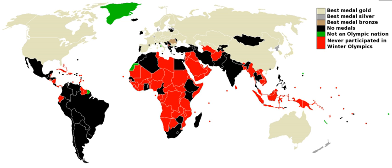Germany has competed under five different designations, including as two separate teams at several games. Sources vary in how they present the medals won by these teams. The table below shows sourced combinations of these teams, when applied to the updated medal totals from the main table.